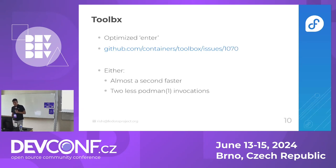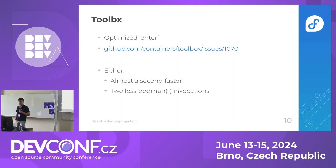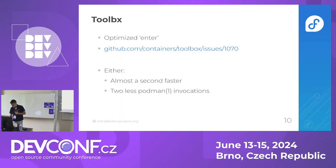We also made the enter command faster. This is how you usually enter the container or use it. Since Toolbox containers are long-lived — typically created once and used several times — it's a very often-used command and people want it to be as fast as possible. Depending on which code path you're hitting, you'll either see it's a second faster from hitting enter to getting the prompt, or you'll have two fewer Podman invocations. This comes from being able to shed some baggage we no longer need, which led to quite a significant improvement.